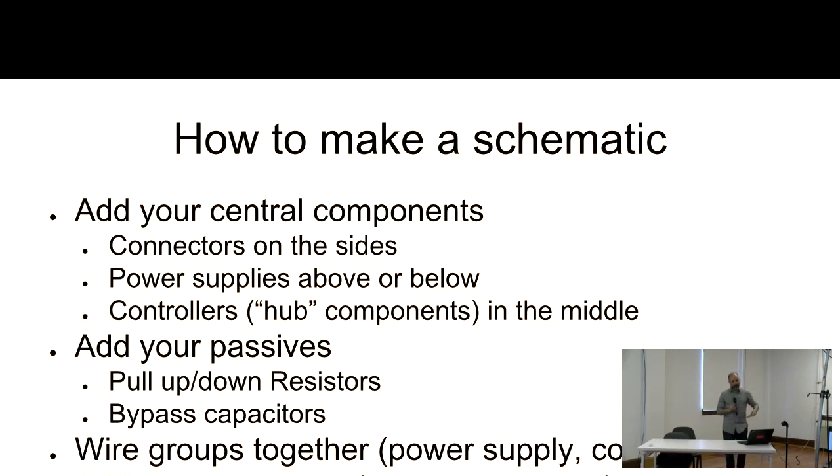So how do you actually make your schematic? You add your central components. You add your connectors on the sides. Because you're going to have your data flow from left to right. And the input ones are on the left, and the output ones are on the right. If you have the same thing, then you can have a thing that flows from left to right, and then down and then back. You can make a circle. And then everyone will know, oh, look, there's inputs and outputs on the same connector. It's just intuitive. You add your passives, you wire groups together, your power supplies, controllers, and then you add documentation.